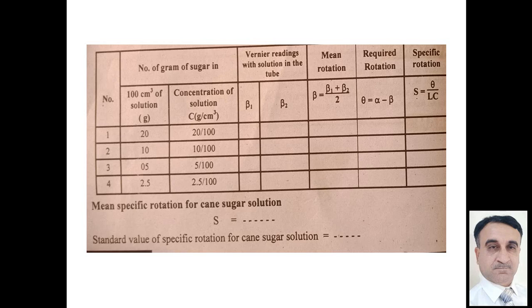So here we have 20% or 10% or 5% or 2.5% solution for this solution. Mean specific rotation for cane sugar solution is which we find. This unit is degree per decimeter and concentration we use here per centimeter cube. Standard value of the specific rotation of the cane sugar solution is 52.7 approximately.